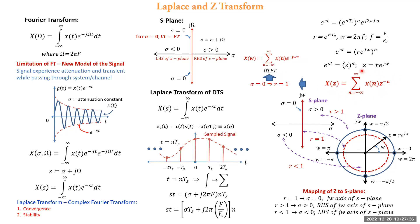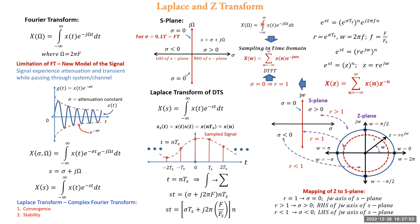This is called the Discrete-Time Fourier Transform (DTFT). So the Z-transform evaluated on the unit circle becomes the DTFT. This equation can also be obtained by sampling the Fourier transform in the time domain: integration becomes summation, x(t) becomes x(n), and e^(−jωt) becomes e^(−jωn).